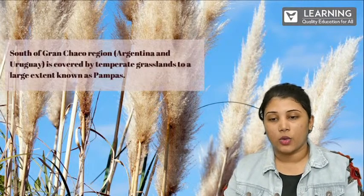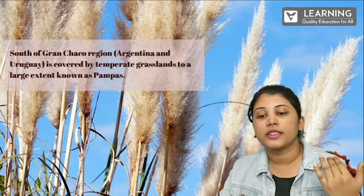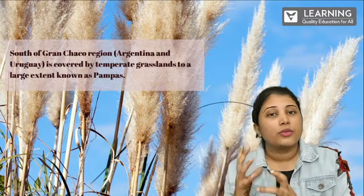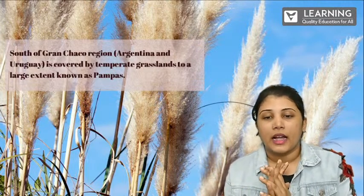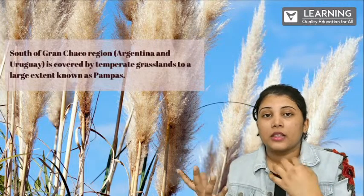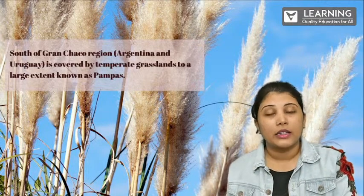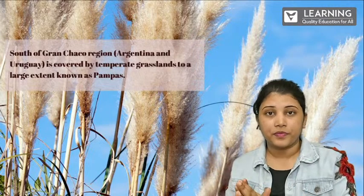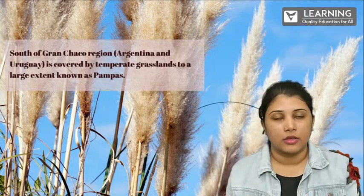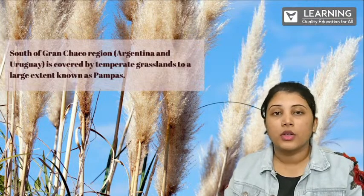South of the Gran Chaco region, Argentina and Uruguay are covered with temperate grassland known as Pampas. This is a very lovely kind of grass — it produces small, pretty petals like a flower. Once you blow it, it flies in the air. You may have seen this kind of grass near your area. In that region, when the season comes it blooms, but when the season goes, the plant dies. It is a very specific seasonal plant. This is a place in Argentina where these Pampas grow.